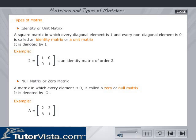Here we see a square matrix being converted to a null matrix by replacing all the elements with zeros. Hence we get a zero matrix of order 2.